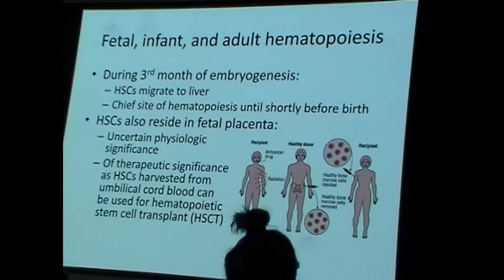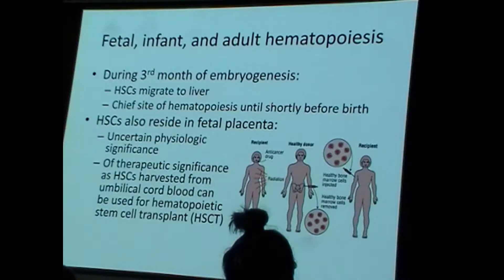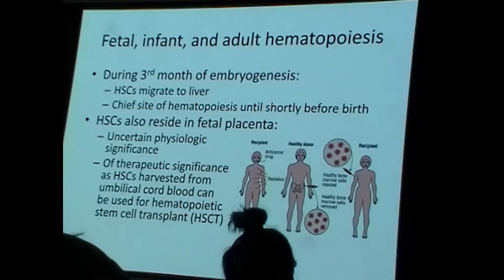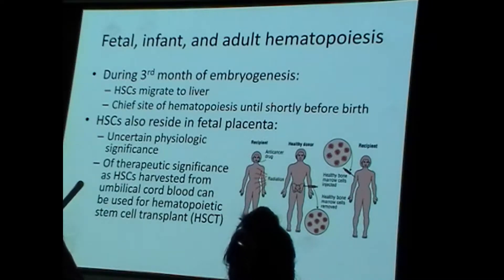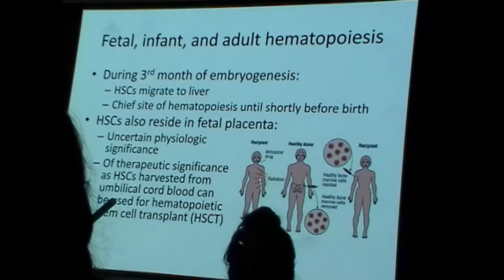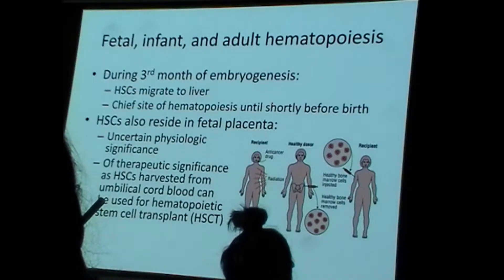Hematopoiesis begins during the third month of embryogenesis, and this begins in the liver. Hematopoietic stem cells migrate into the liver, and this is where hematopoiesis occurs until around birth. If we think back to previous lectures, the liver can get abnormally large during certain disease states.